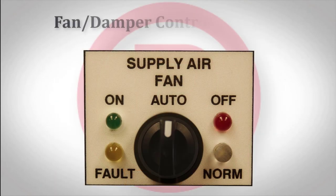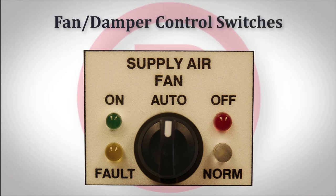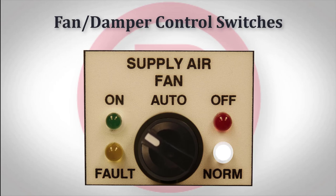The three-position fan and damper control switches will act as follows. When in the auto position, the fire alarm panel controls fan and damper activation, and the normal LED should be illuminated. To manually activate or open the fan or damper, turn the key to the on or open position. Once the panel sees a positive on or open feedback from the fan or damper, the on LED will illuminate.